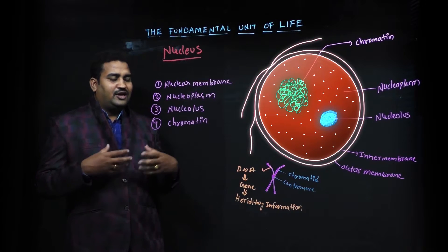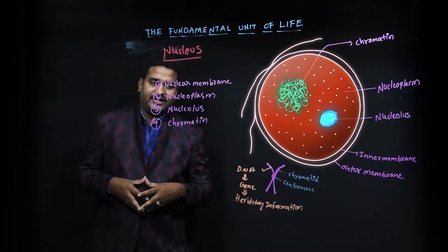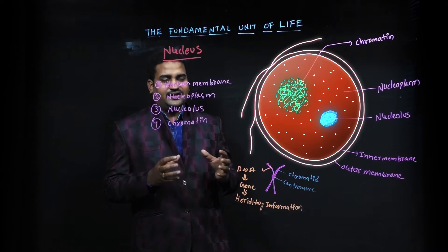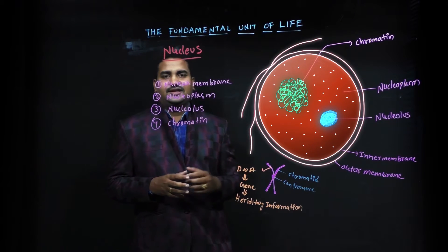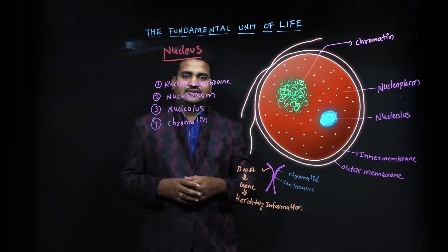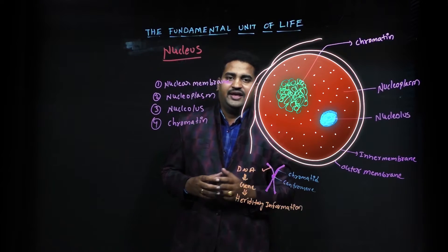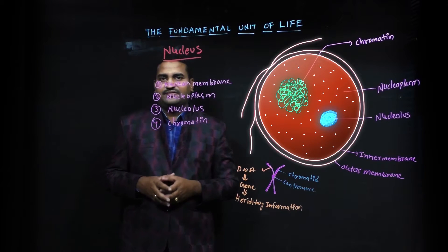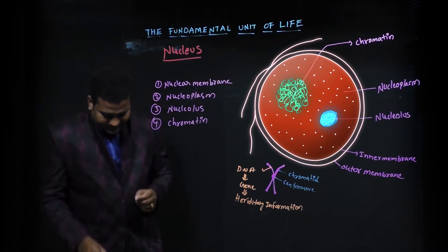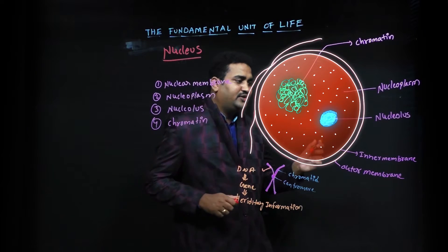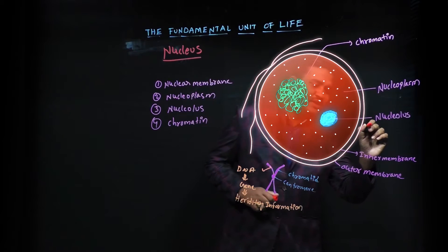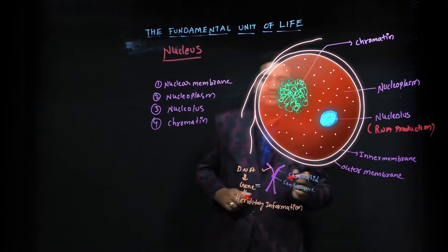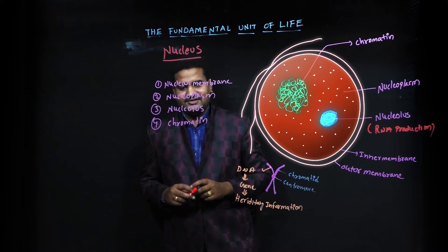Now let us talk about the nucleolus. It is a small organelle-like structure present in the nucleus. This is not covered by any membrane. This nucleolus is the site of synthesis of RNA. Nucleolus is very important for RNA production — RNA synthesis occurs in the nucleolus.